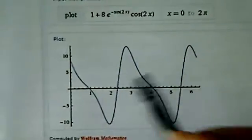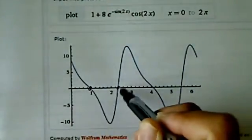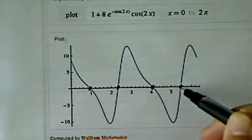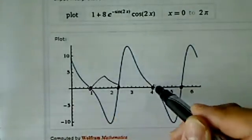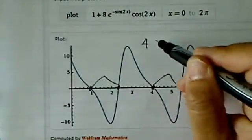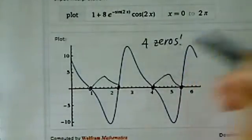And you can see, sure enough, the periodicity is determined by the cos(x). So it does indeed have four zeros.